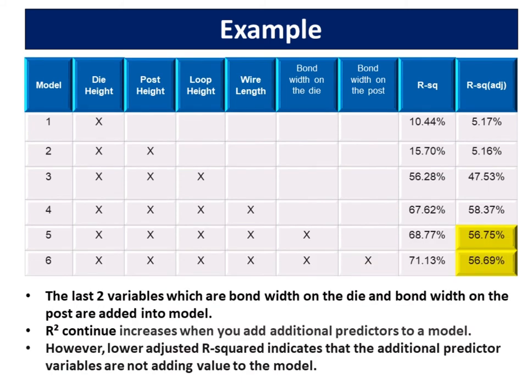The last two variables, which are bond width on the die and bond width on the post, are added into the model. R-squared continues to increase when you add additional predictors. However, a lower adjusted R-squared indicates that the additional predictor variables are not adding value to the model.